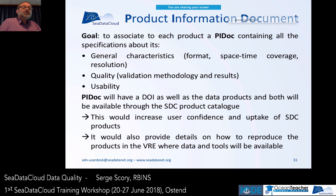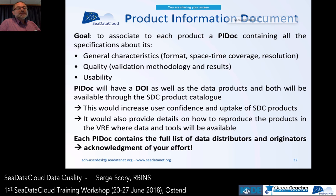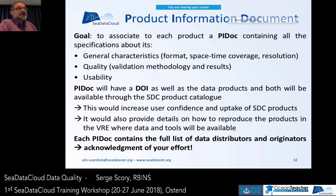For each of the aggregated data sets, we wrote a product information document describing the data set and its quality. These documents will have a DOI, making the data sets more visible. Importantly, in this product information document we provide the list of all the data collating centers and data providers whose data were used — so you are duly acknowledged, and you can use this document to show that you are contributing to this process of making data better and providing the community with new and better products.